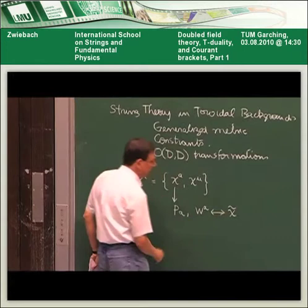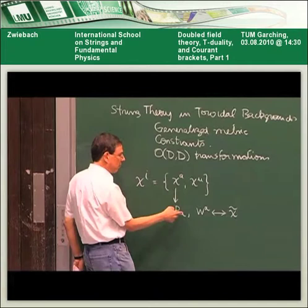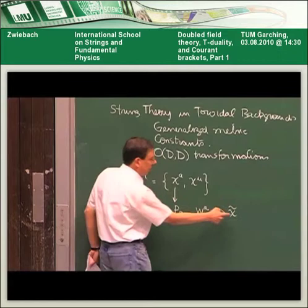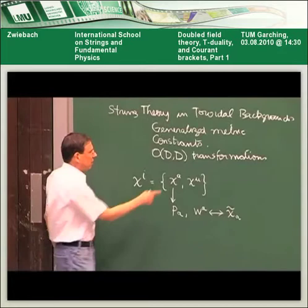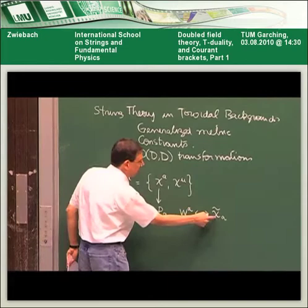These compact coordinates on circles are associated with momentum excitations p_a, but the closed string also has winding excitations. There is a momentum quantum number and a winding quantum number W^a that should be associated to new coordinates x̃_a. Because these are dual to each other, one has the index up and one has the index down. Windings naturally have an index up, and therefore the dual coordinate has an index down. So naturally, in toroidal compactification, in addition to the usual zero-mode x^a, there is a dual zero-mode x̃_a.